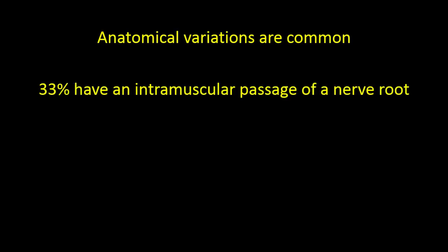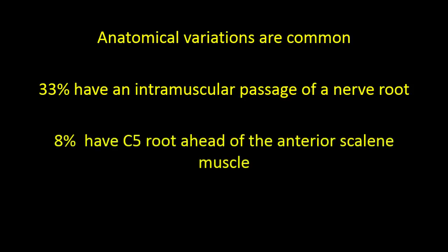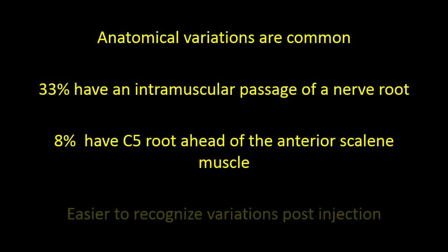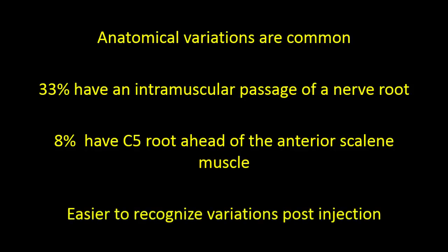The anatomical variations in the interscalene area are quite common. While up to 33% have an intramuscular passage of a nerve root, in 8% of cases the C5 root lies ahead of the anterior scalene muscle. These variations are often easier to recognize after an injection has been made. Let's have a look at three videos demonstrating these common variations.